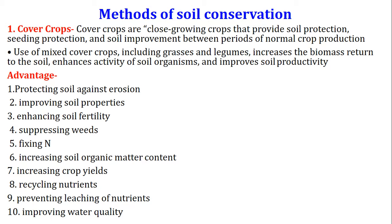The first method of soil conservation is the cover crop. Cover crops are close-growing crops that provide soil protection, seeding protection and soil improvement between periods of normal crop production. Use of mixed cover crops including grasses and legumes increases biomass return to the soil, enhances activity of soil organisms, and improves soil productivity. Advantages include: protection against erosion, improved soil properties, enhanced soil fertility, weed suppression, nitrogen fixation, increased soil organic matter, increased crop yield, nutrient recycling, prevention of nutrient leaching, and improved water quality.